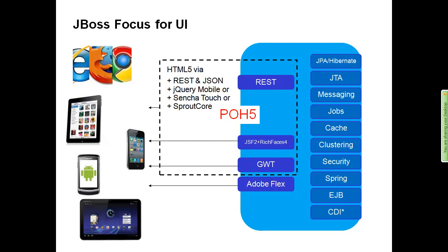The one we're focused on here today is what we call the PO5 architecture. PO5 is specifically taking an HTML5 client and interacting with the server-side through REST and JSON primarily. You can augment that HTML5 client with something like jQuery Mobile, Sencha Touch, or Sprout Core, or other JavaScript libraries to give a richer desktop and mobile experience.